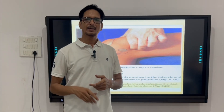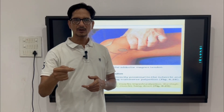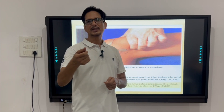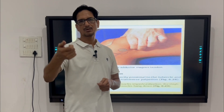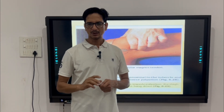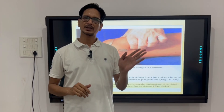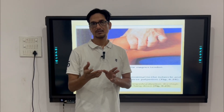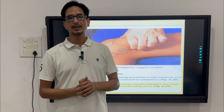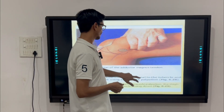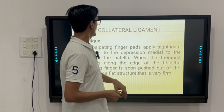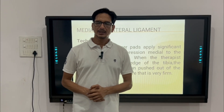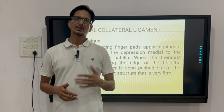Secondly, you can identify the adductor tubercle first and then identify the adductor magnus tendon, following it proximally. So with both methods you can palpate the tendon of adductor magnus and trace it to the adductor tubercle.